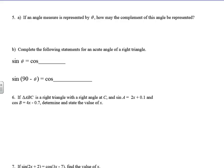This is a Greek letter theta that we use. People who get involved in Greek life — fraternities and sororities — become more familiar with this. But it's just another way of using x as a variable. So if an angle measure is represented by theta, the complement of this angle measure can be represented as 90 minus theta.